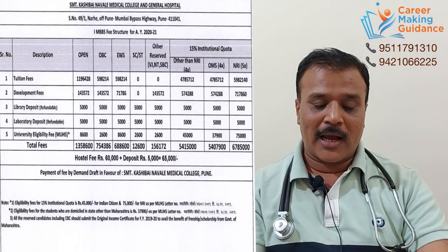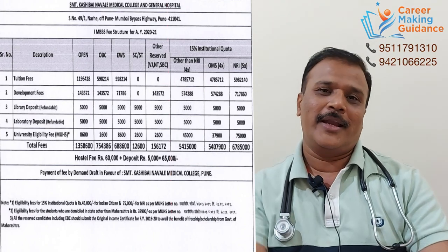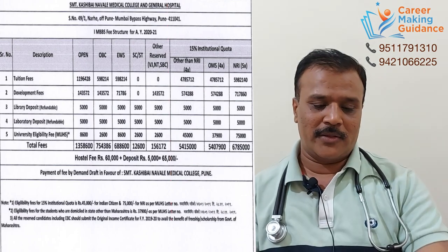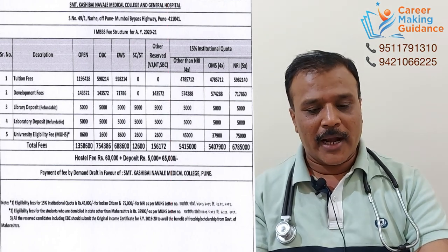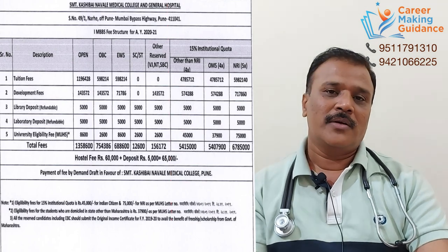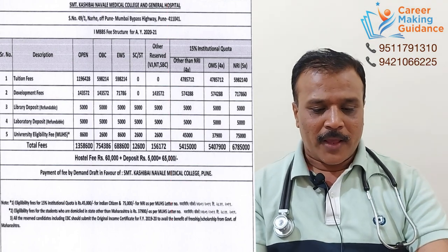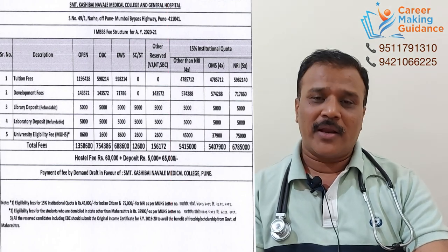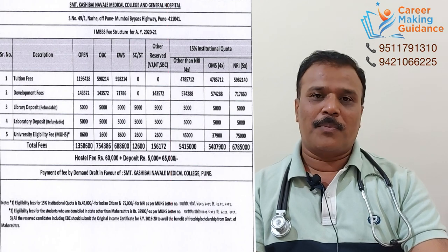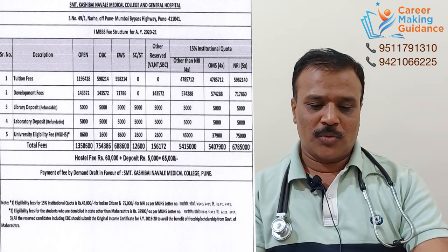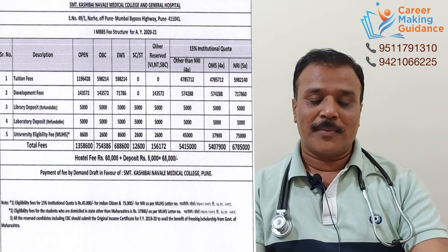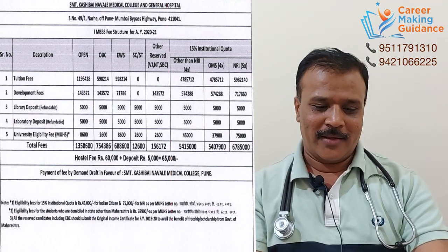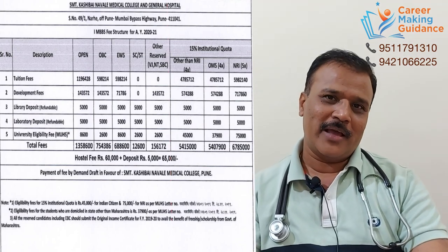In the general category, the fee is approximately 13,08,800. In the OBC category, the fee is 7,05,356. In another OBC subcategory, the fee is 7,08,806. In one category the fee is 1,05,122, and in another category the fee is 15,15,000.